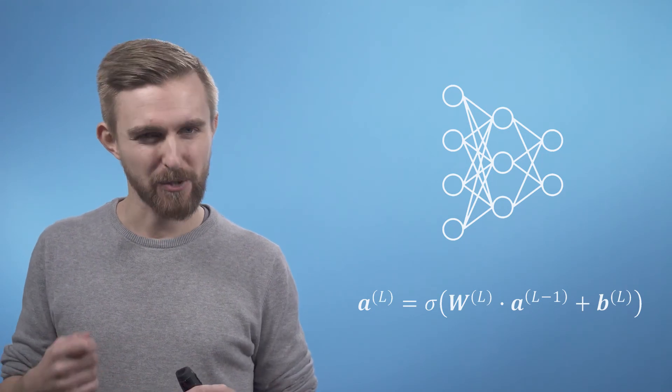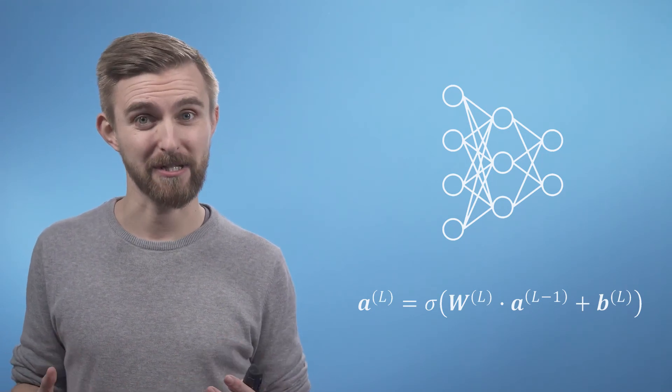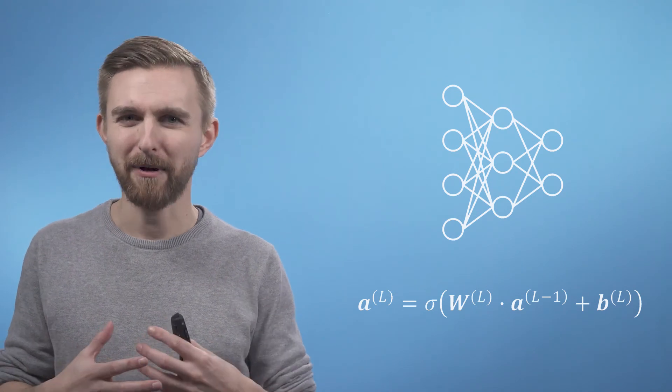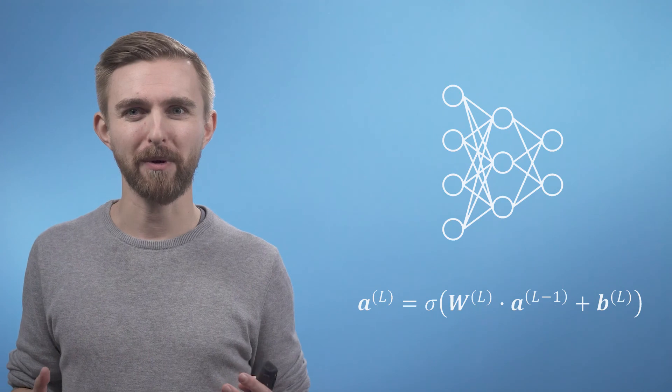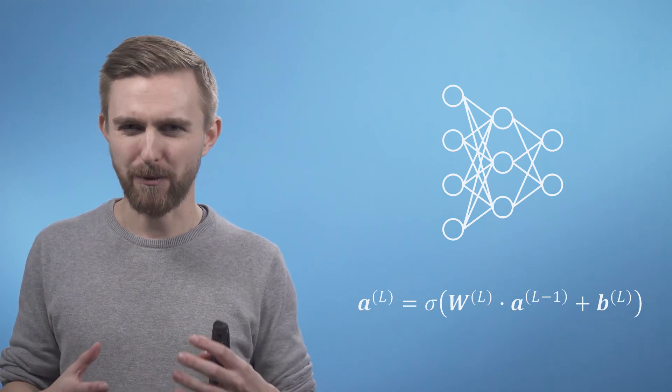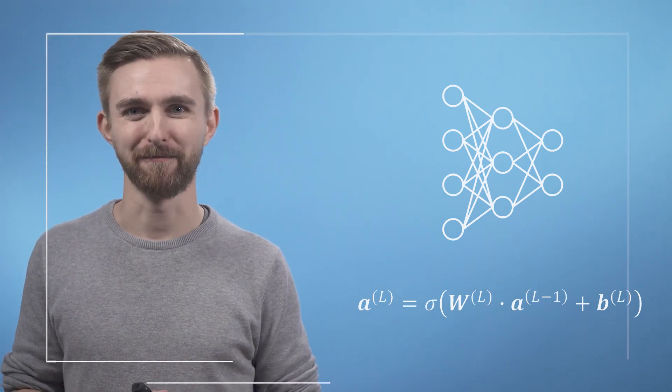However, persuading your network to do something interesting, such as image recognition, then becomes a matter of teaching it all the right weights and biases, which is what we're going to be looking at in the next video as we will bring the multivariate chain rule into play. See you then.